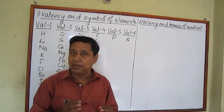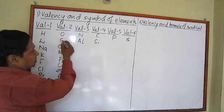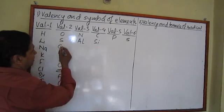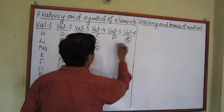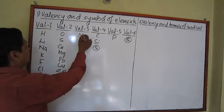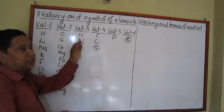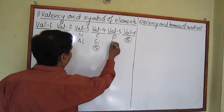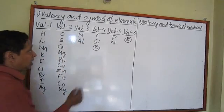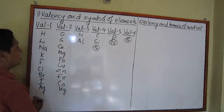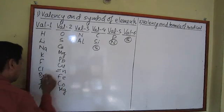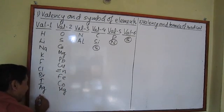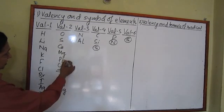Some elements have variable valency, which we must also know about. For example, sulfur's normal valency is two, but sometimes it is four or six. Nitrogen normally has valency three but sometimes valency five. Among metals, copper sometimes has valency one — which is why I'm writing it here as well.